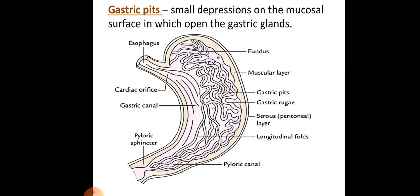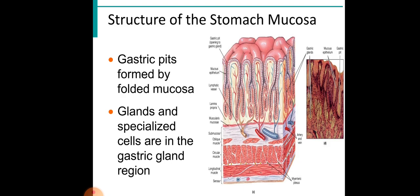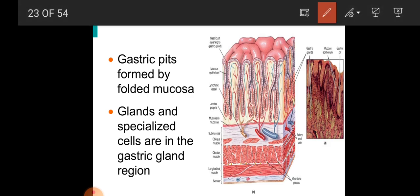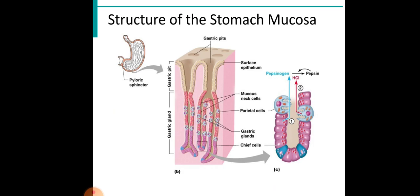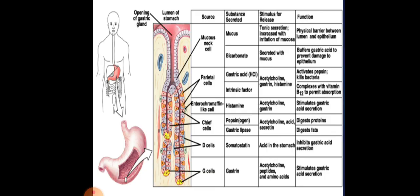Another structure found in the stomach is the gastric pit. Gastric pits are small depressions on the mucosal surface into which the gastric glands open. Gastric glands are specialized structures formed by the epithelial lining of the stomach — when the epithelium dips down it forms a gland, and the opening on the surface is the gastric pit. The gastric glands contain different kinds of cells: mucus neck cells, parietal cells, gastric gland cells, and chief cells, all with different functions.